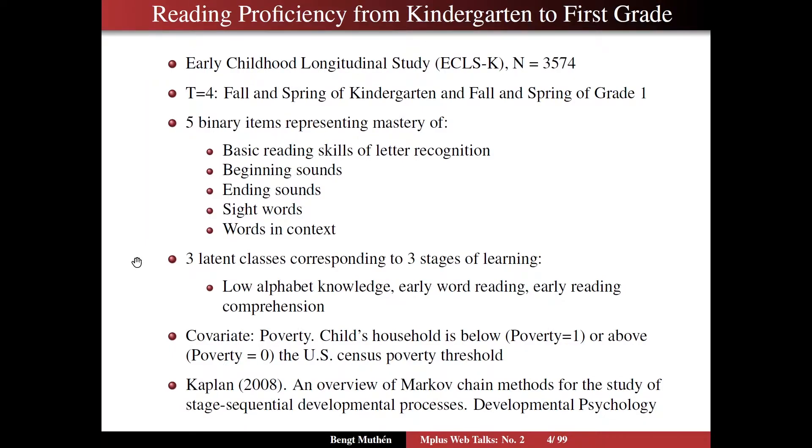We're going to use a covariate, a binary covariate poverty, indicating whether or not the child's household is below or above the U.S. census poverty threshold. This analysis draws on the analysis in Kaplan 2008 in Developmental Psychology, where you also see references to the data collection and the creation of the five binary items.